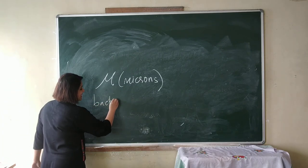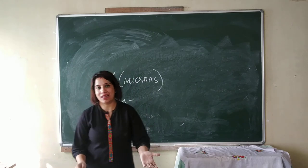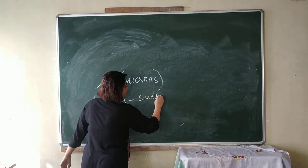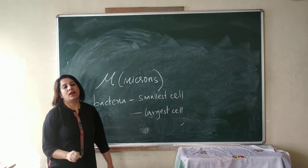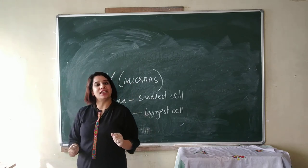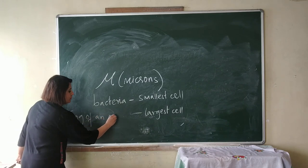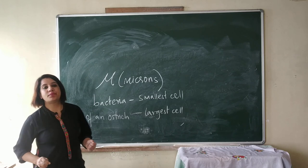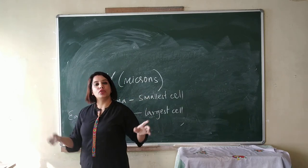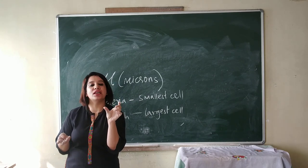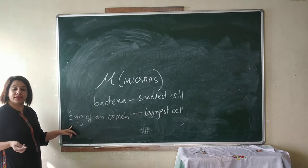The largest cell — by the way, an egg is a cell — the largest cell is the egg of an ostrich. It is around 28 centimeters big. Your long ruler is 30 centimeters, so imagine 28 centimeters — somewhat the size of your long ruler. Whereas the size of a hen's egg is only about 6 centimeters. So, the largest cell is the egg of an ostrich.